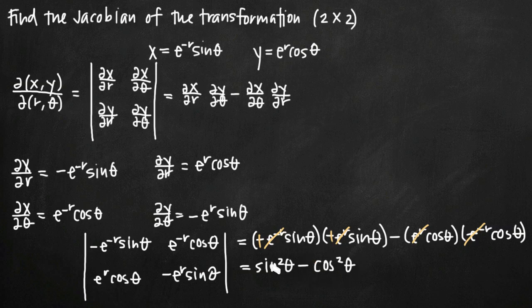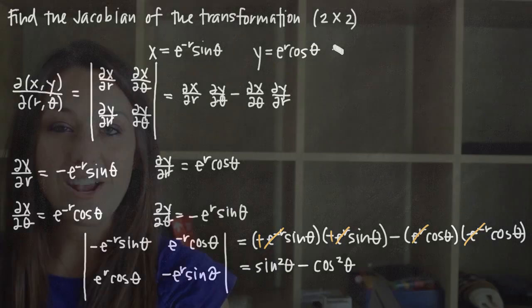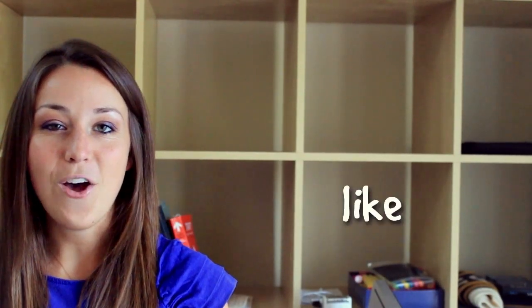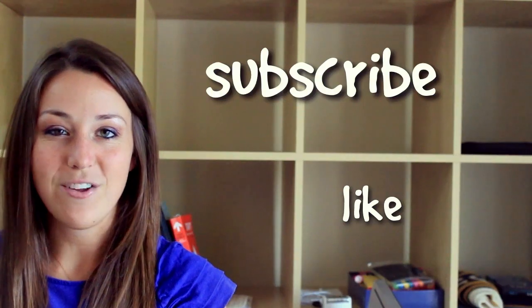That's our final answer — the Jacobian of the transformation is sine squared theta minus cosine squared theta, for two equations x and y defined in terms of r and theta. If you need help finding the Jacobian for a three-by-three matrix with three variables defined in terms of three others, check out my video on that as well. I hope you found this video helpful — like and subscribe to be notified of future videos.